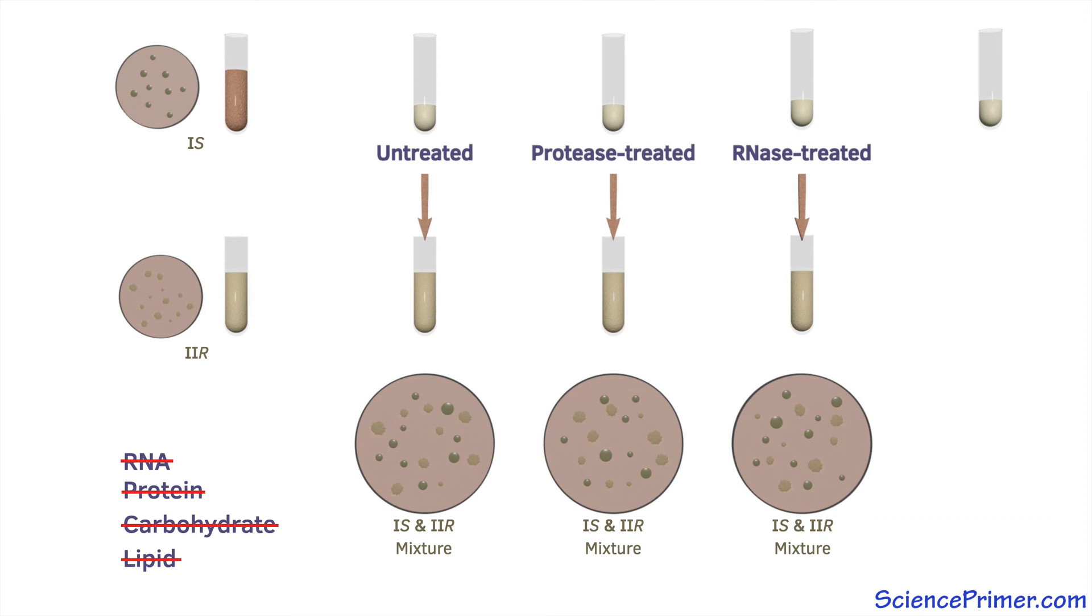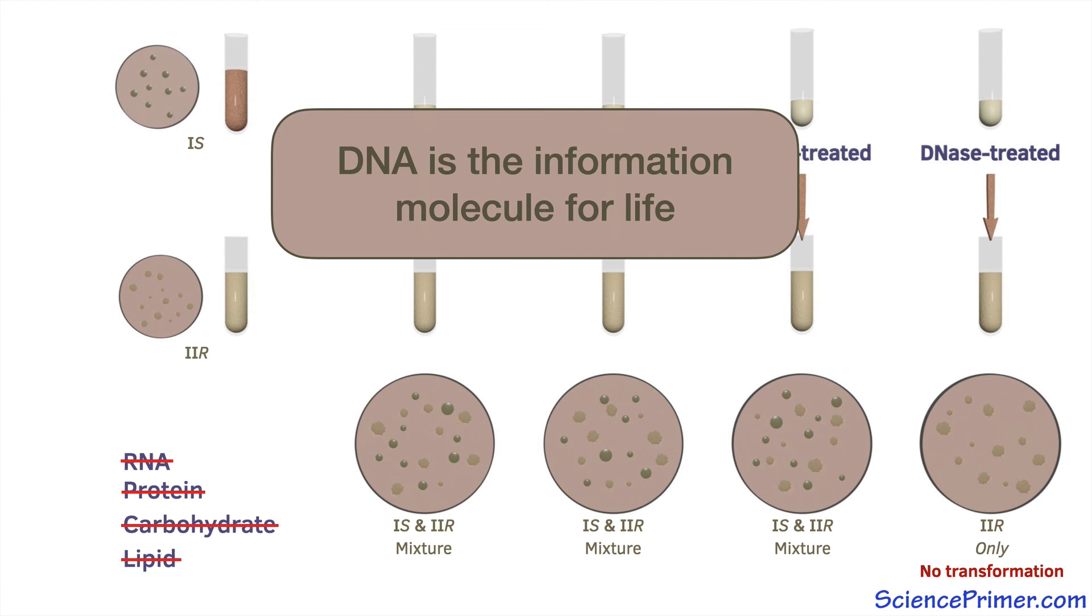Finally, the extract was treated with DNase to degrade the DNA in the sample. After this treatment, a final transformation trial was done, and in this treatment only type 2 rough cells grew. In other words, in the absence of DNA, no transformation occurred.